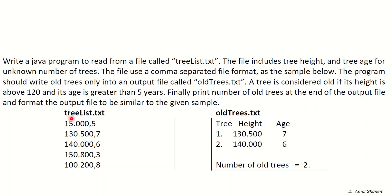Assume we have the input file treeless.txt with an unknown number of lines — so we have an unknown number of trees. For each line, the first number represents the tree height and after the comma the second number represents the tree age. The output file oldtrees.txt should be formatted as follows: 'Tree  Height  Age', then for each old tree, a number, its height, and its age.